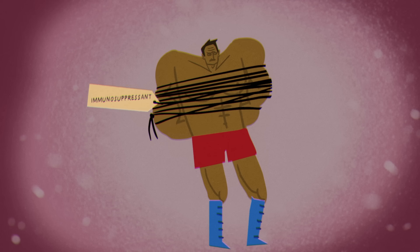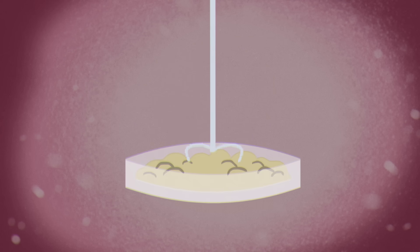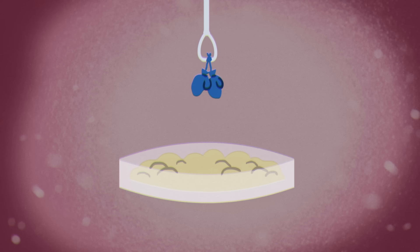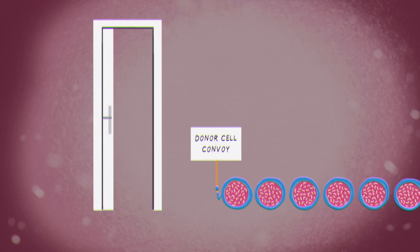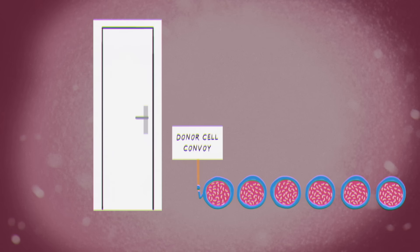Patients may take immunosuppressant medications, or certain immune cells may be removed from the donated sample in order to reduce the risk of graft-versus-host disease. But even if a patient avoids graft-versus-host disease, their immune system may reject the donor cells. So it's crucial to find the best match possible in the first place.